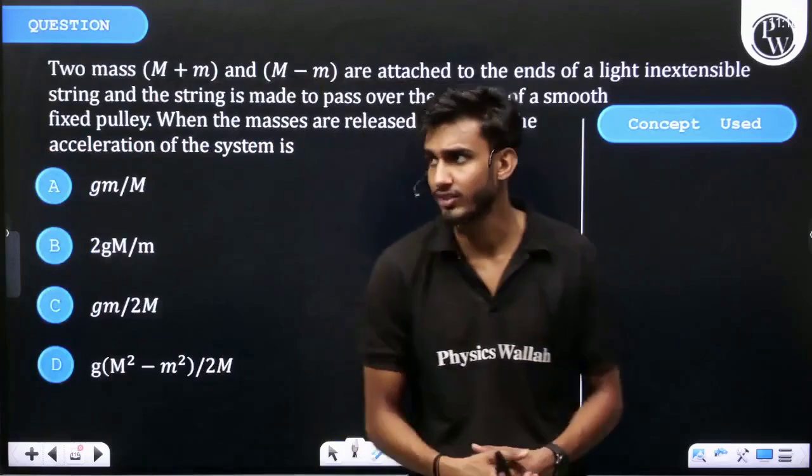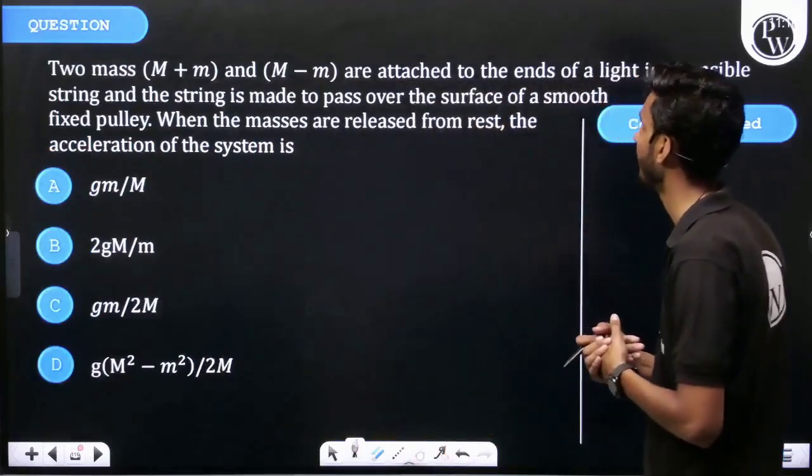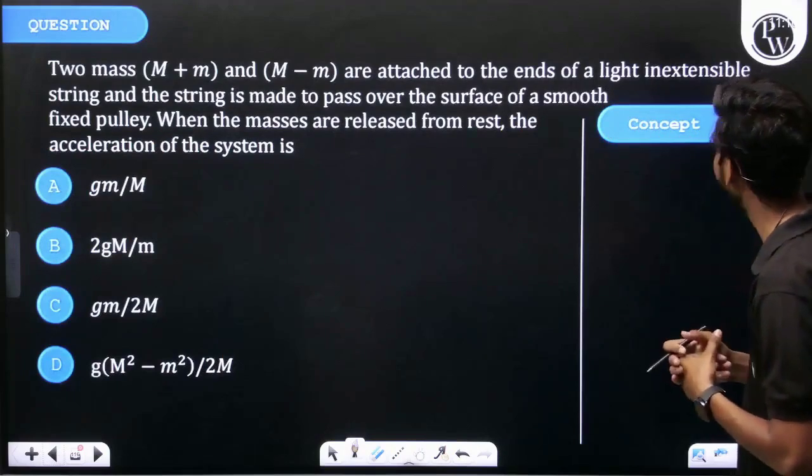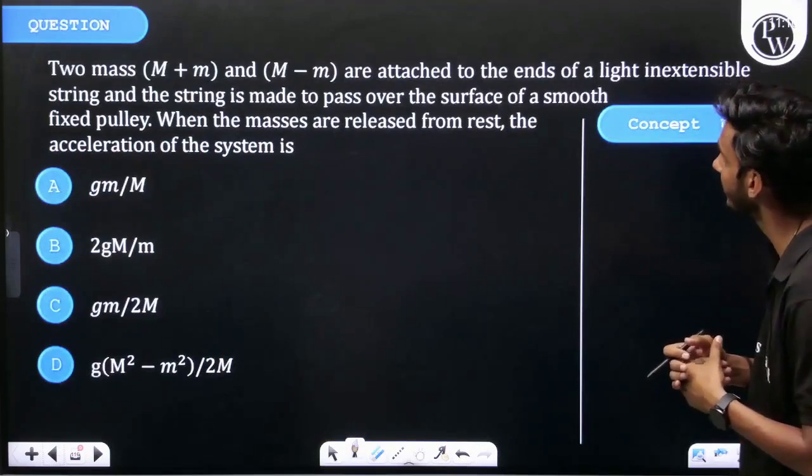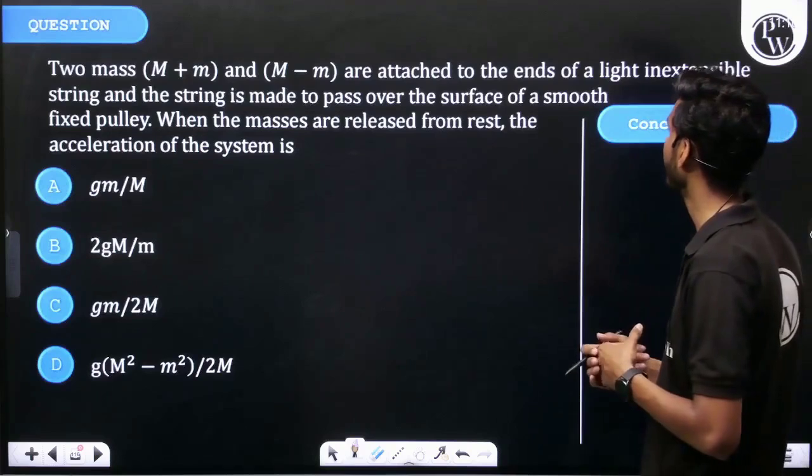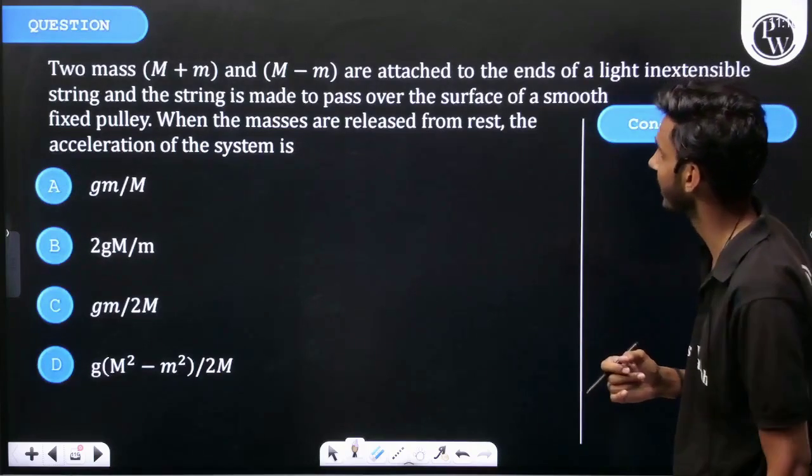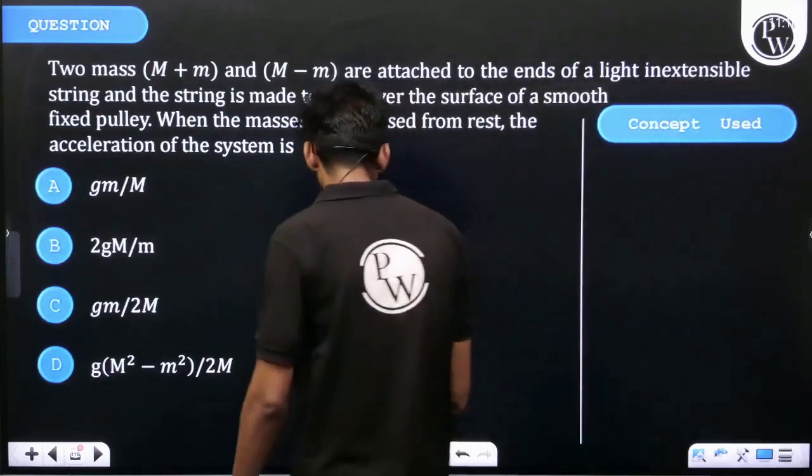Okay, let's see the question. Two masses (M + m) and (M - m) are attached to the ends of a light inextensible string, and the string is made to pass over the surface of a smooth fixed pulley. When the masses are released from rest, the acceleration of the system is...